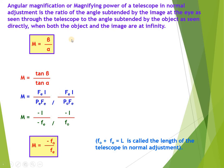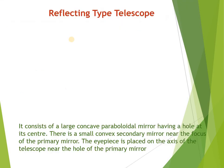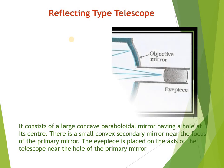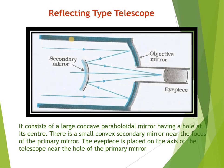We have studied the refracting type telescope; now it is time to study the reflecting type telescope. A reflecting type telescope is a telescope in which a mirror is used. There are some advantages we need to study. Looking at the diagram, this reflecting type telescope consists of a large concave paraboloidal mirror having a hole at its center.